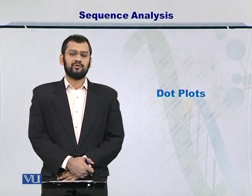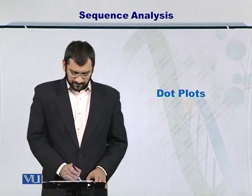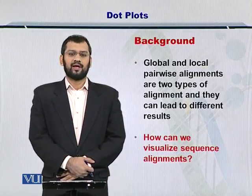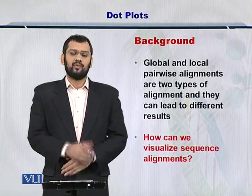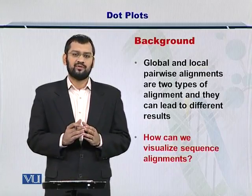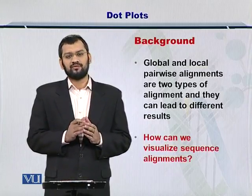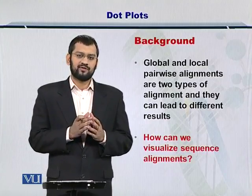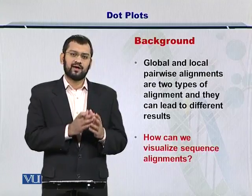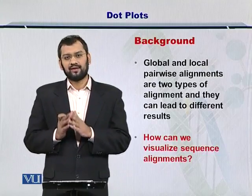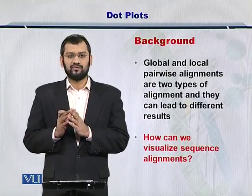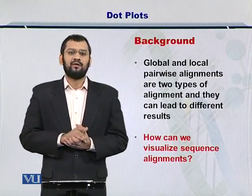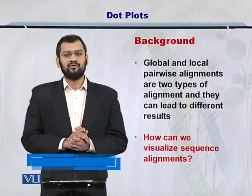Dear students, now I am going to introduce you to dot plots. You already know that global and local alignments help you to compare two biological sequences in two different ways. Global alignments allow you to compare the two sequences such that the entire sequences are compared, while local alignments allow you to compare the two sequences in such a way that local matches are more importantly scored.